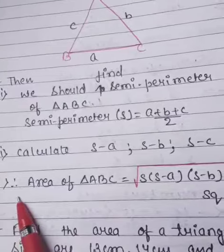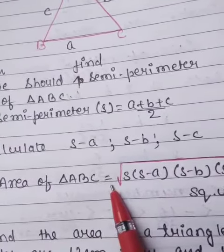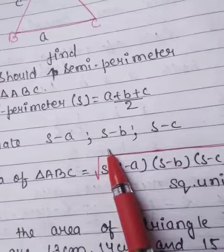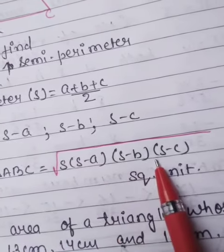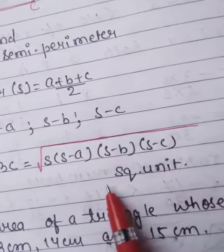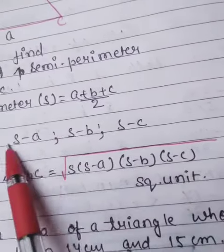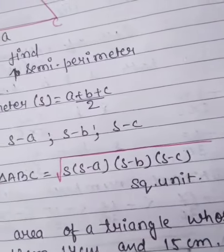Third step is, area of triangle ABC is equal to root over S into S minus A, S minus B, S minus C square units. In this way, we will calculate the area of triangle.